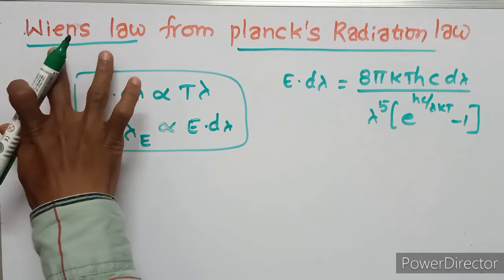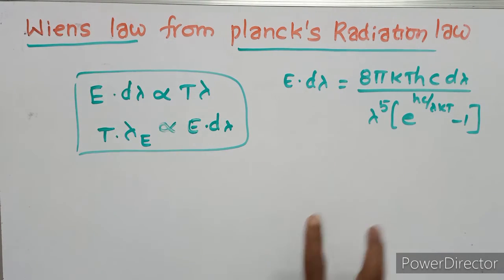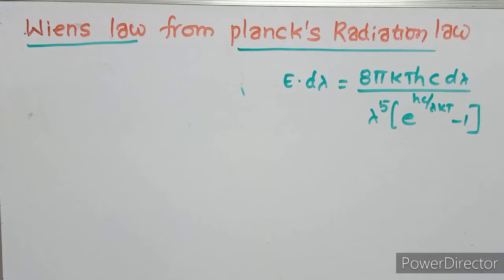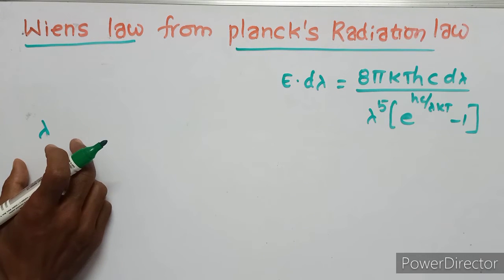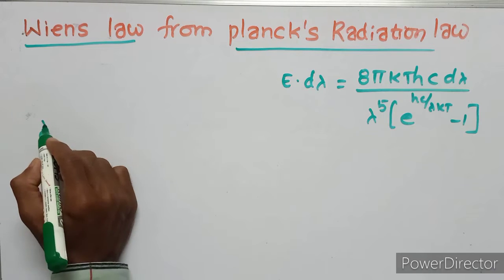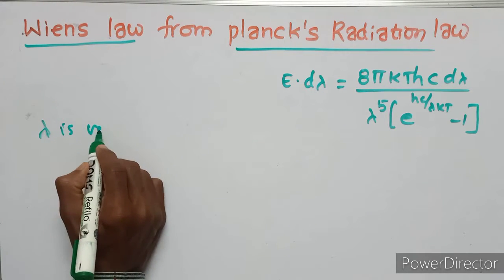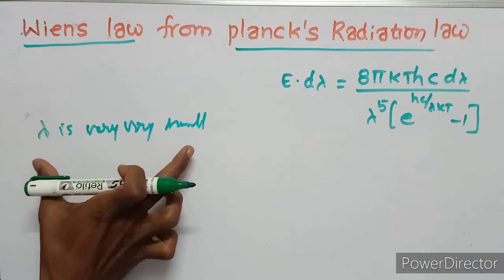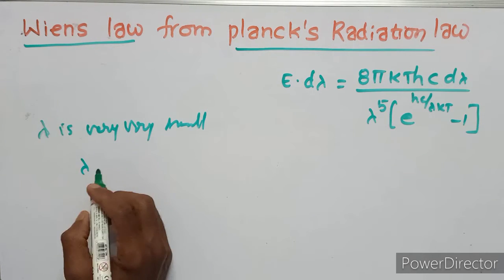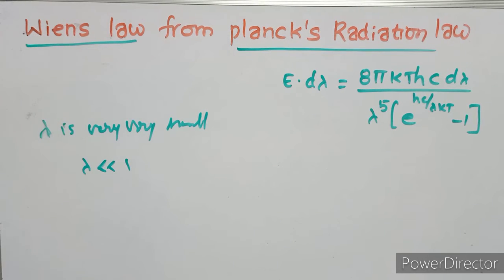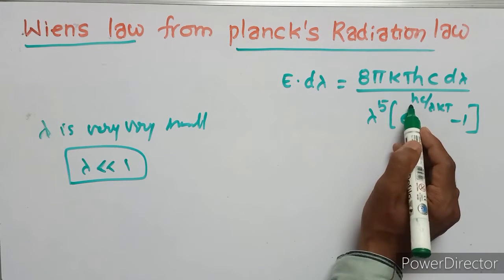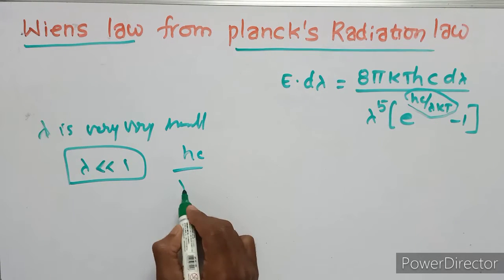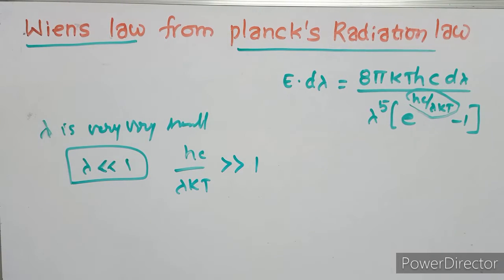Our task is to derive Wien's law from Planck's radiation law. We take Planck's radiation law and apply the condition for shortest wavelength — where lambda is very, very small. For this condition, lambda is much less than 1, so the exponent term hc/(lambda·kT) is much greater than 1.